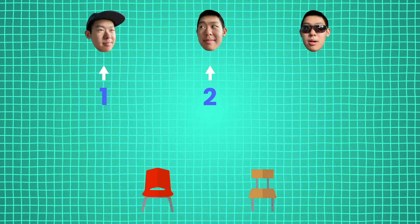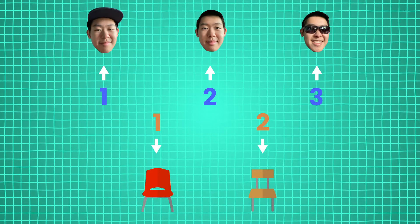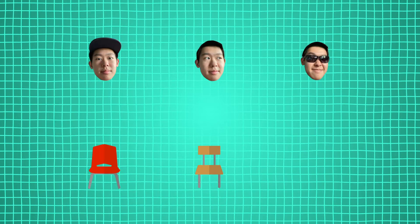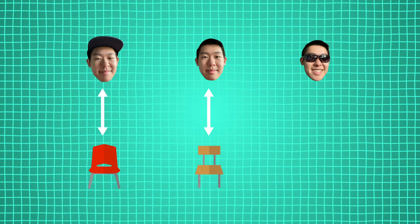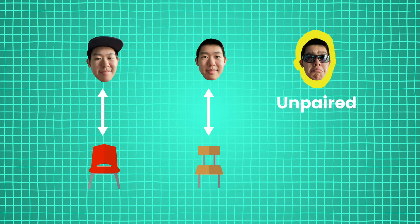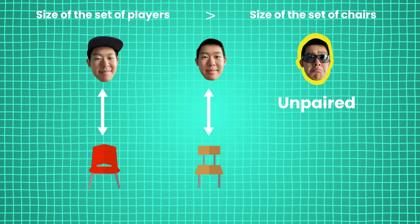We could count the players and then the chairs separately to verify that there are more players than chairs, or we can cut out the middleman. The act of sitting uniquely pairs each player to exactly one chair, except for one unlucky loser. Since we have an unpaired player, we know that there must be more players than chairs, without even counting.